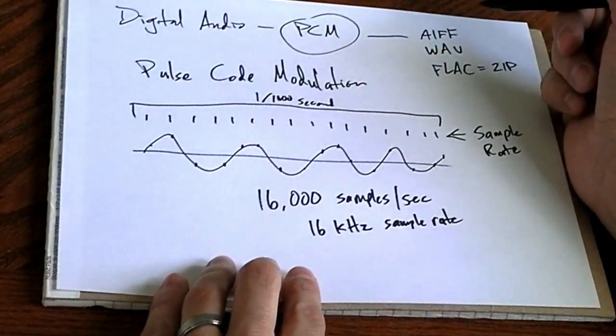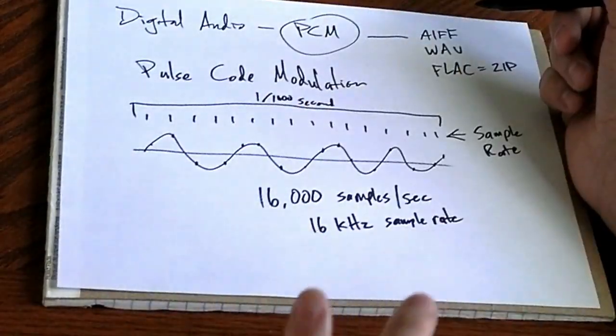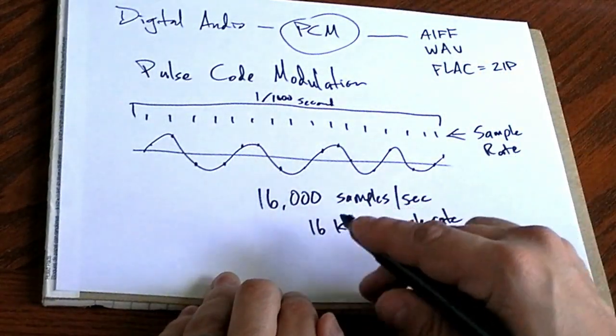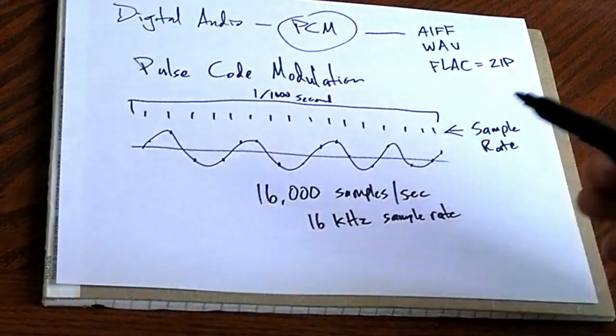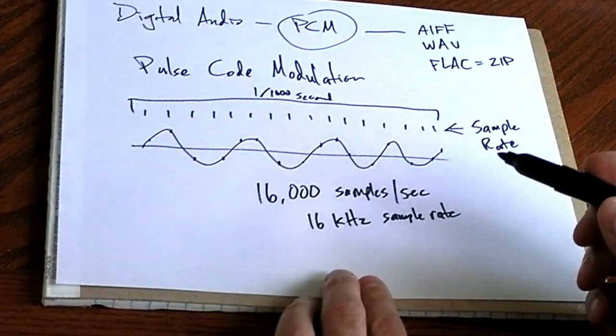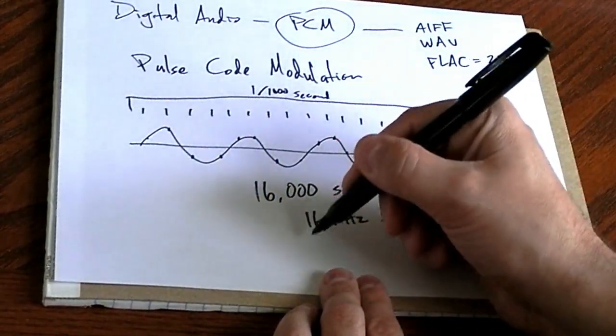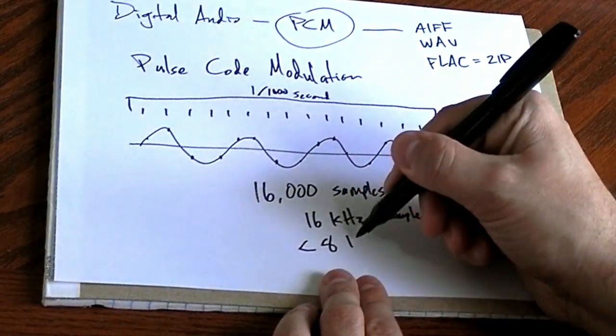Sample rate relates to how high of frequencies you can accurately represent. And let's say you were sampling 16 kilohertz. That would mean you could accurately represent sounds that go up to a little under 8 kilohertz.